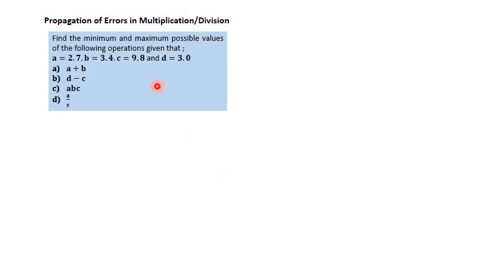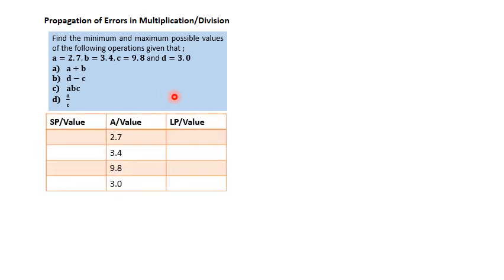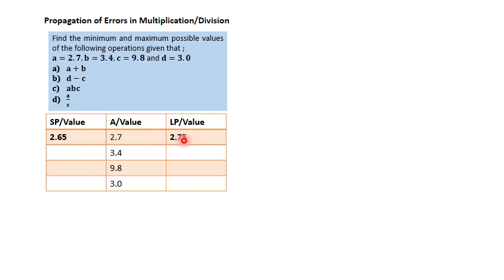We have a question where we find the minimum and maximum possible values of the following operations, given that a is 2.7, b is 3.4, c is 9.8, and d is 3.0. These are the actual values listed on the table. For example, for 2.7, the smallest possible value is 2.65 and the largest possible value is 2.75.